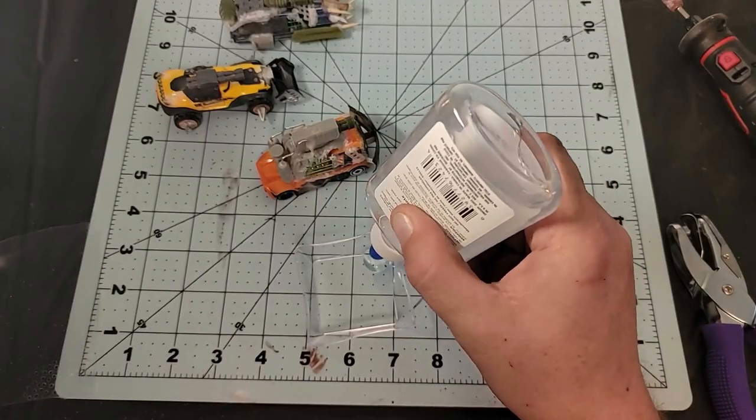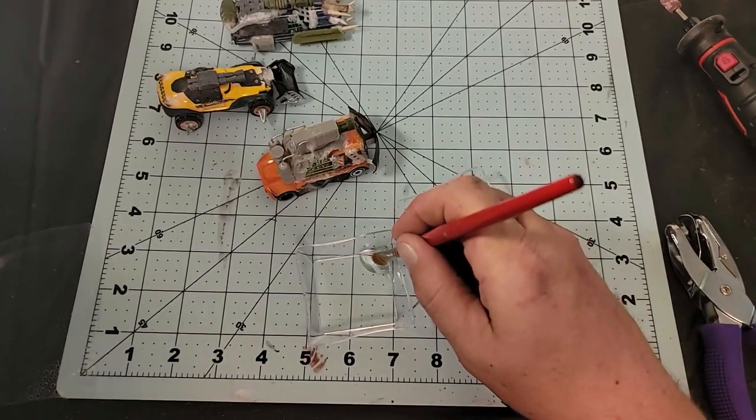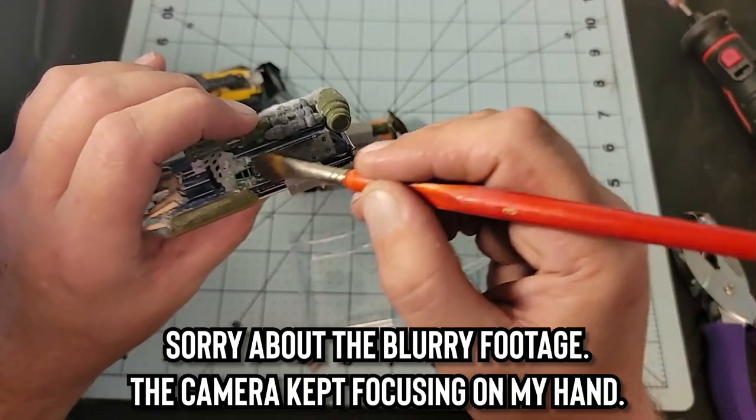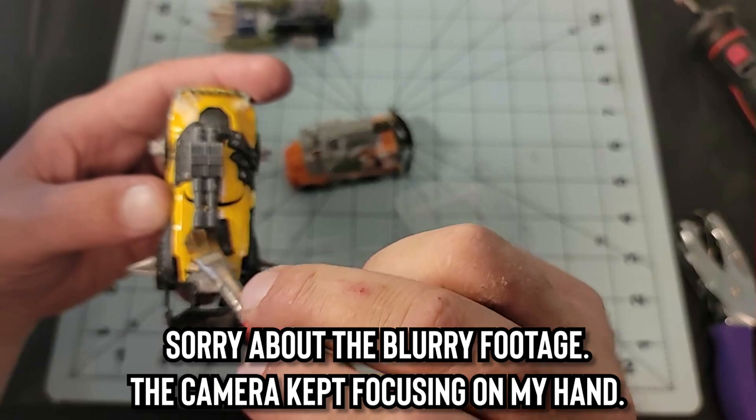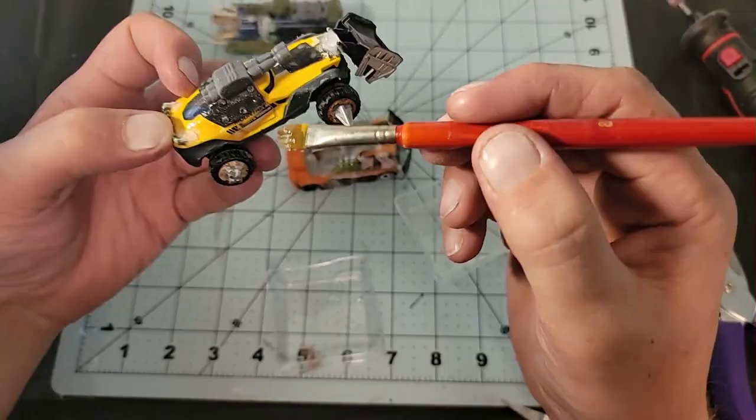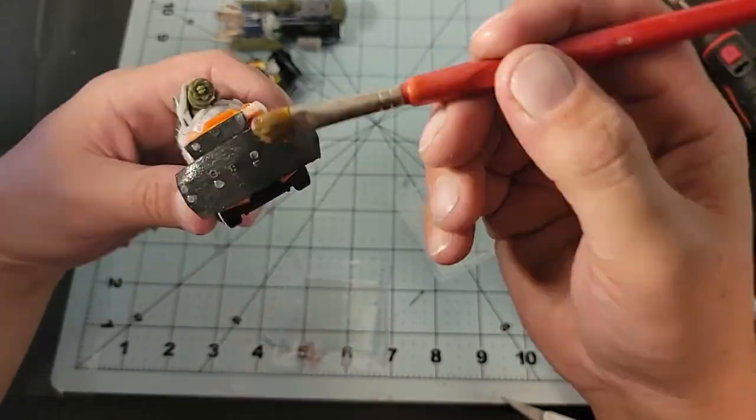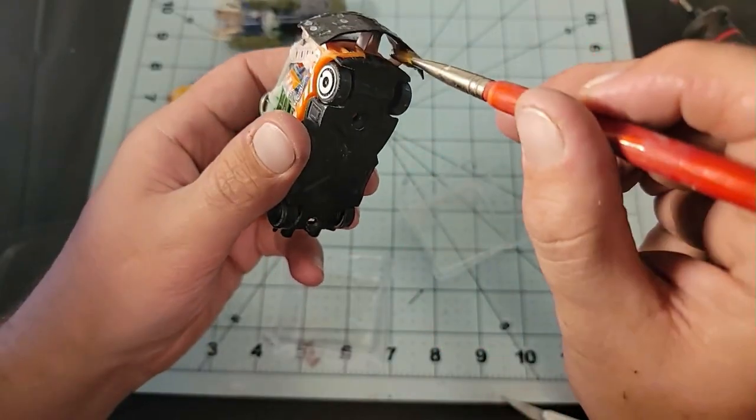Now before we move on to priming these things and painting them, I wanted to make sure I use regular clear glue to paint over the top of all of the foam pieces, because I use spray paint primer and spray paint like super glue can melt the foam, so giving it a coat of glue will help protect it from the spray paint.